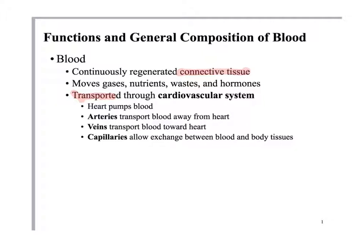Blood is going to transport gases such as oxygen and carbon dioxide, nutrients like minerals and glucose — you've heard of blood sugar — waste, and hormones such as estrogen, testosterone, progesterone, thyroid hormone, and insulin. All those hormones from the endocrine system are transported through the blood.